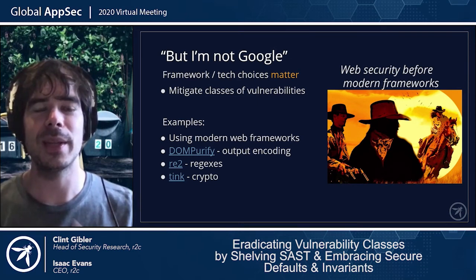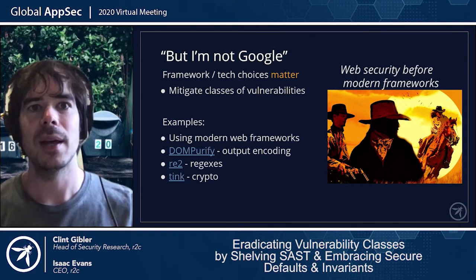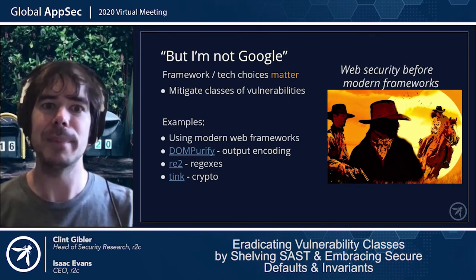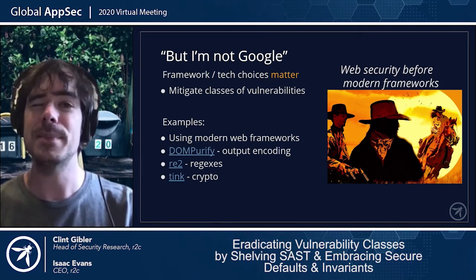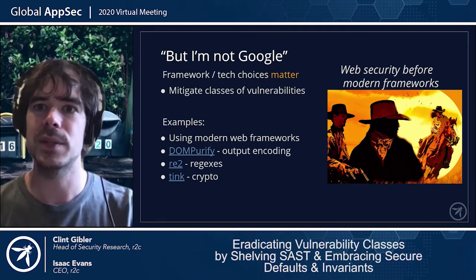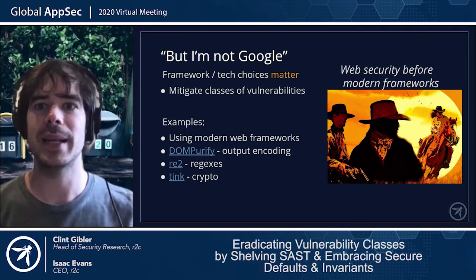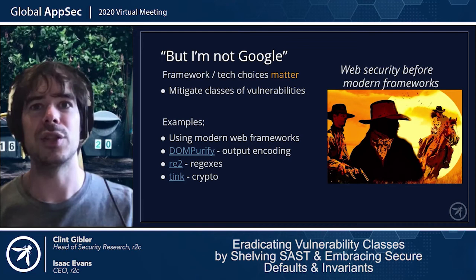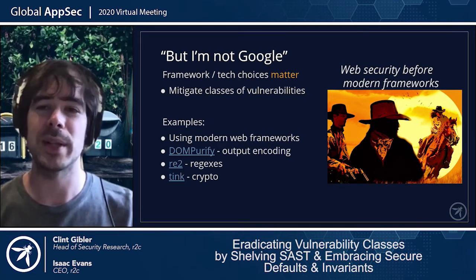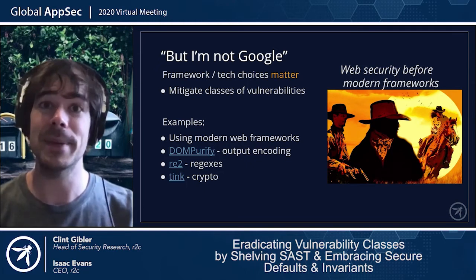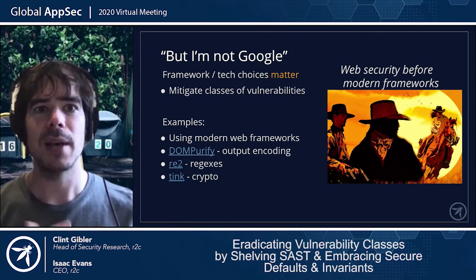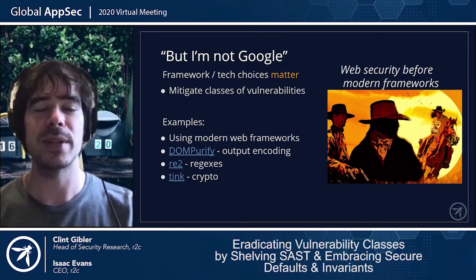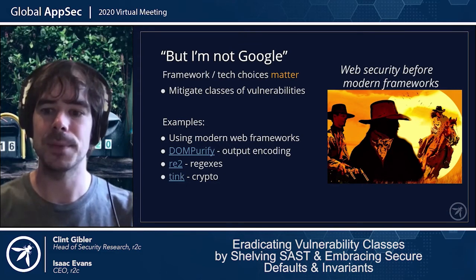You don't need to be Google, Netflix, or Facebook to get this value. You can get a lot of value by choosing modern web frameworks and well-supported libraries that mitigate entire vulnerability classes. Thinking back to the early 2000s, XSS and SQL injection were everywhere. Once frameworks started output-encoding by default and encouraging use of ORMs, these issues became much less prevalent. By using modern frameworks and secure-by-default libraries, even without a massive AppSec team, you can get a lot of the same value.